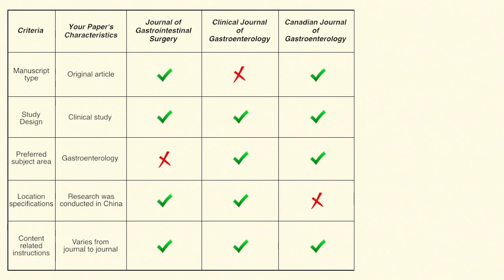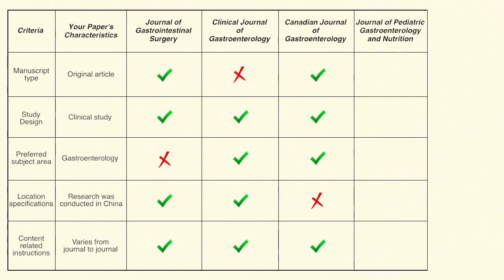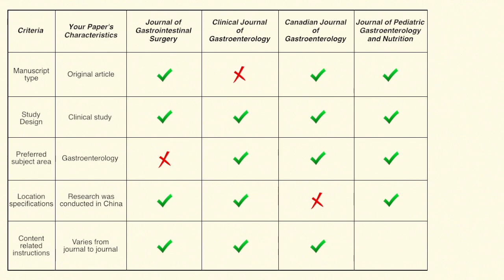Now let's move on to the Journal of Paediatric Gastroenterology and Nutrition. This journal publishes both original research and clinical studies, the preferred subject area is gastroenterology, and there are no location specifications. But looking at the content-related instructions, this journal publishes research done on children — it's about paediatric gastroenterology and nutrition — whereas your research was done on adults. So this is a mismatch.